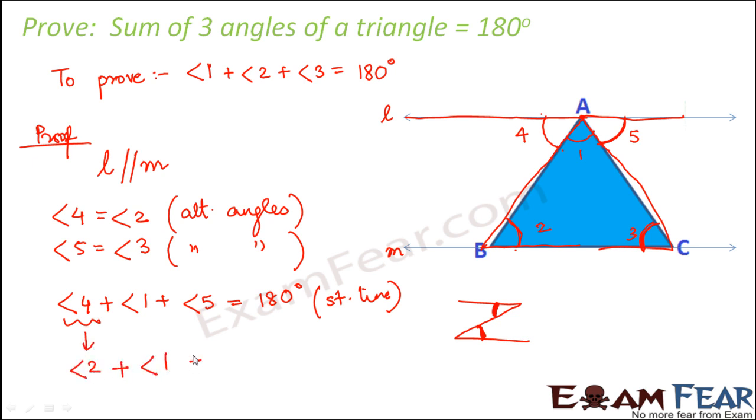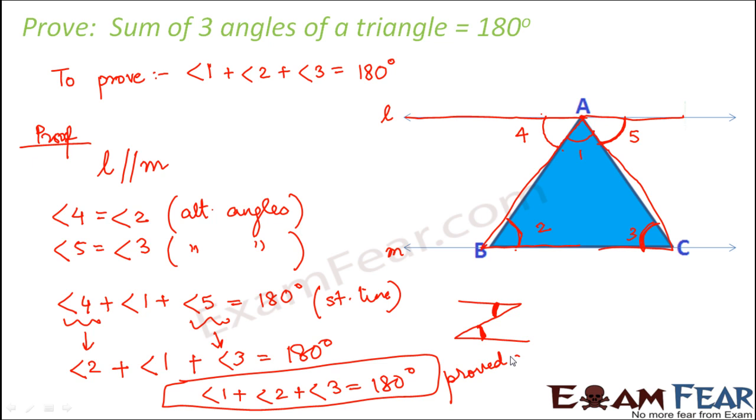Angle 1 we will leave as it is. Angle 5 can be written as angle 3. So what did we get? We found that angle 1 plus angle 2 plus angle 3 is equal to 180 degrees. This is what we wanted to prove, right? So we proved that the sum of three angles of a triangle is always equal to 180 degrees.